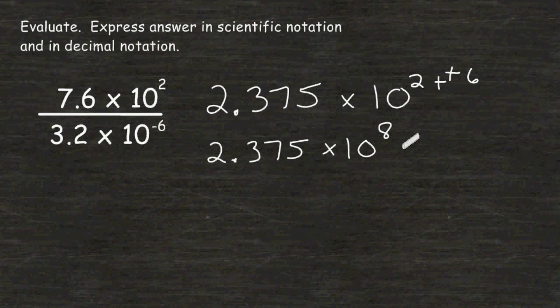The next thing that we have to do is to check and see if this is in scientific notation. In front of your decimal, you are only allowed to have a single digit. And that single digit has to be a value between 1 and 9. And of course, 2 is within that range. So everything here is in scientific notation format. So this is our final answer: 2.375 times 10 to the eighth power.